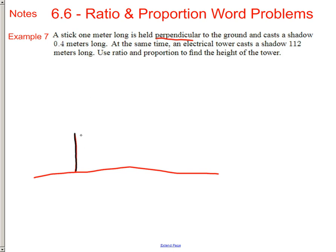So let's just draw the ground, and here's the yardstick standing up at a 90 degree angle. The height of it, from the very top to the bottom, is one meter, and it's casting a shadow.